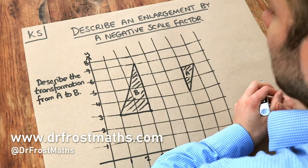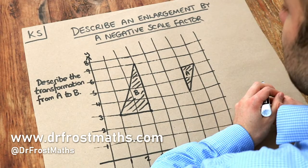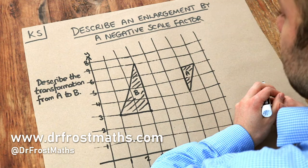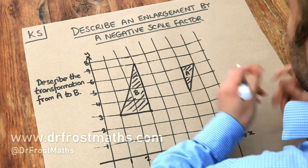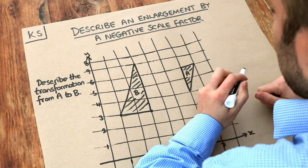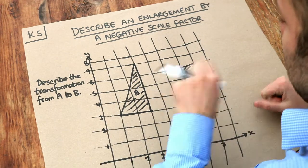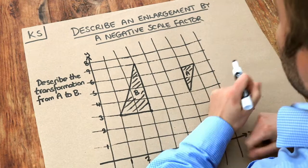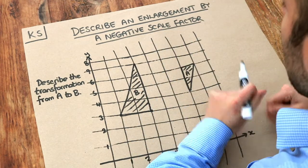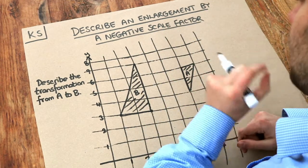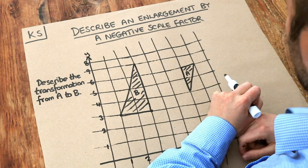Hello and welcome to this Dr. Ross Mass key skill video on describing an enlargement by a negative scale factor. Remember, an enlargement is when we make the shape either bigger or smaller. But I also have previously mentioned that it is possible for the shape to flip over as well as becoming bigger or smaller. When the shape flips over we end up with a negative scale factor. I'll show you what we mean by that.